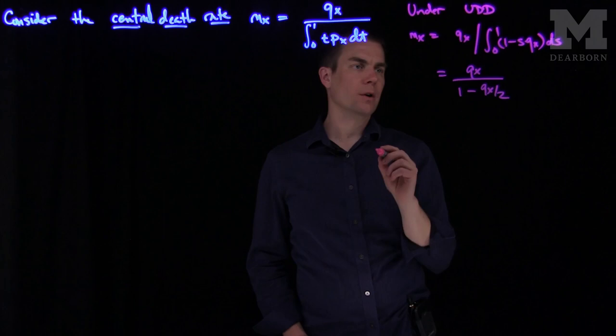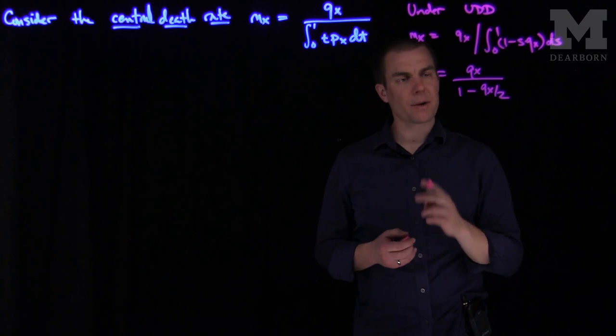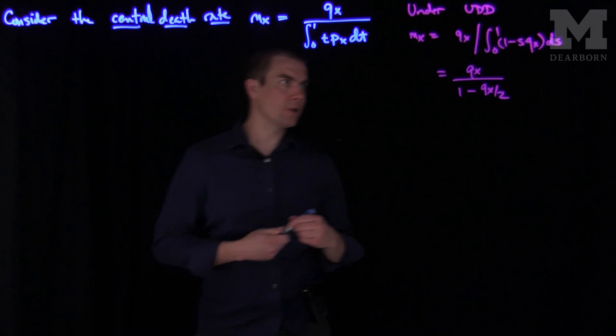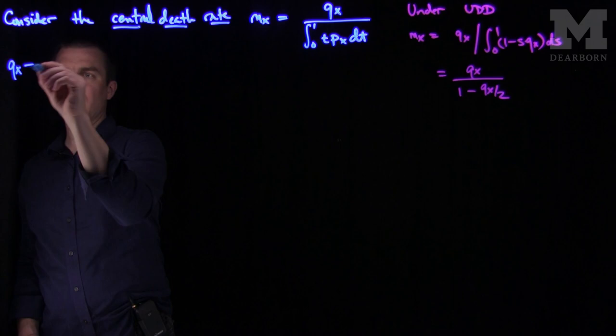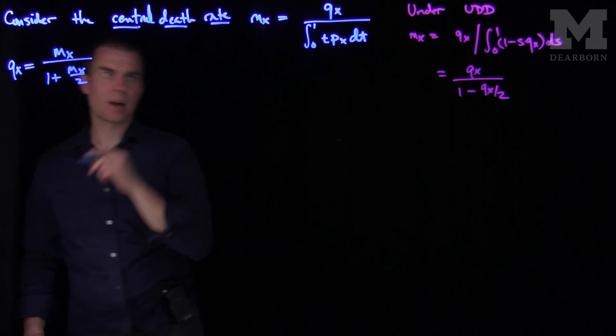Now we can solve for mx and invert this and figure out what the formula for mx is in terms of q. So under the UDD, we have this expression. And what this will tell us is that qx, if you solve for it, will be mx over 1 plus mx over 2 under the UDD assumption.